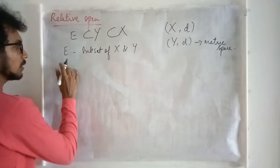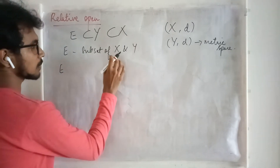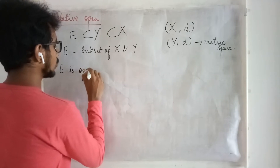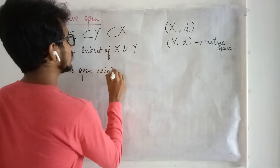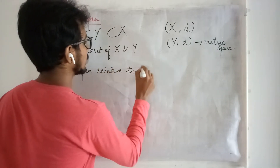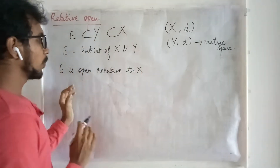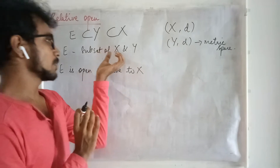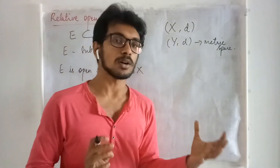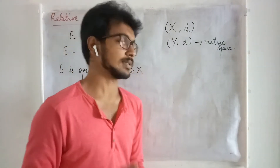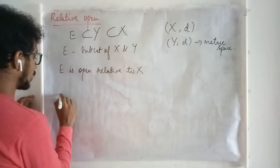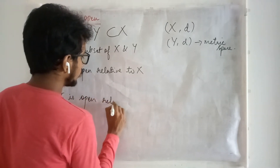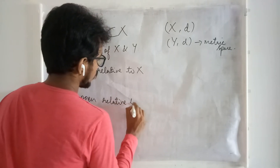Now let me treat E as a subset of X. E is open — open relative to X. When I treat E as a subset of X, when is it open? That is how we are going to say. Similarly, we may also say E is open relative to Y.